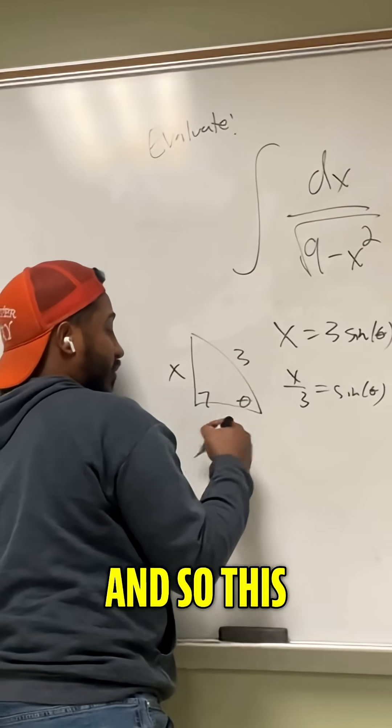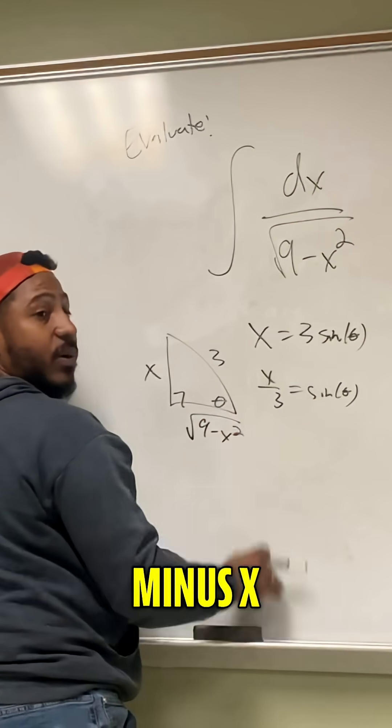So this would be x and this would be 3. And so this third side would be the square root of 9 minus x squared by Pythagorean theorem.